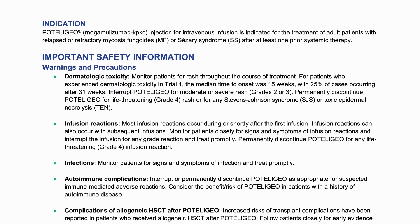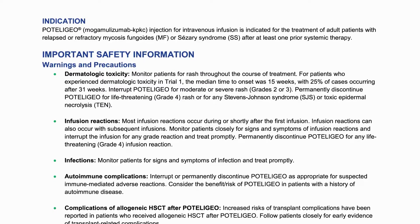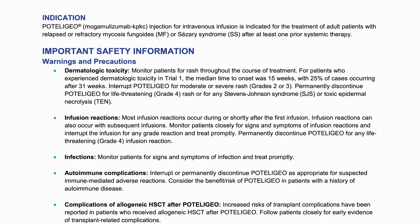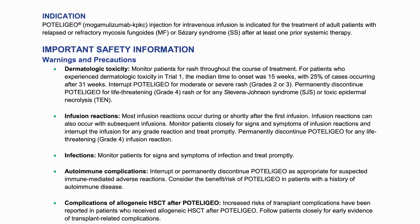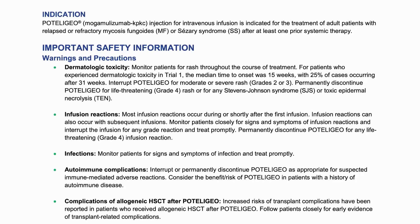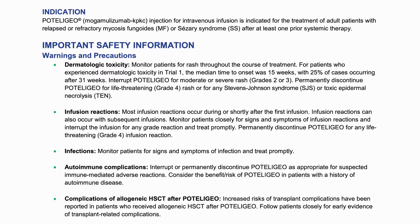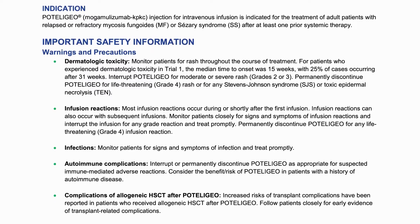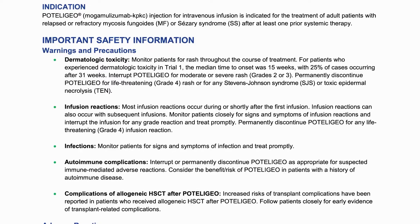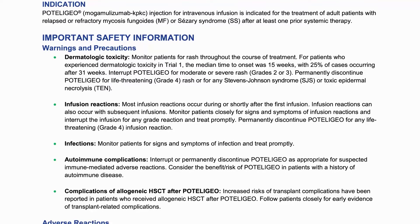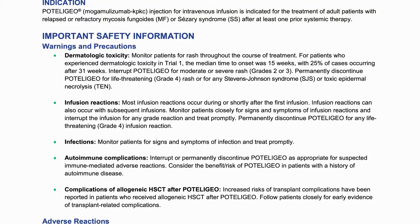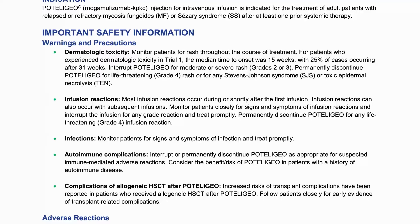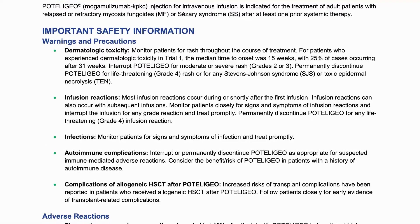Important safety information—warnings and precautions. Dermatologic toxicity: Monitor patients for rash throughout the course of treatment. For patients who experienced dermatologic toxicity in Trial 1, the median time to onset was 15 weeks, with 25% of cases occurring after 31 weeks. Interrupt mogamolizumab for moderate or severe rash, grades 2 or 3. Permanently discontinue for life-threatening grade 4 rash, or for any Stevens-Johnson Syndrome, SJS, or toxic epidermal necrolysis.